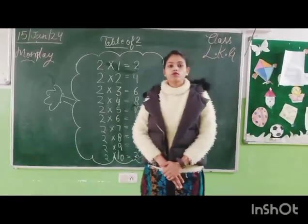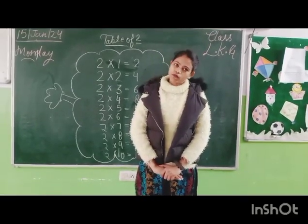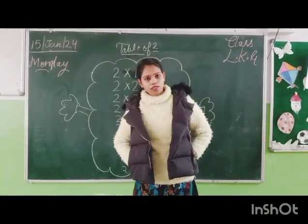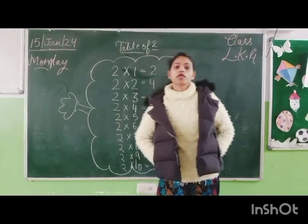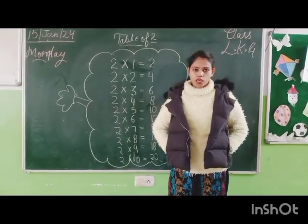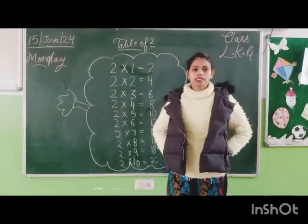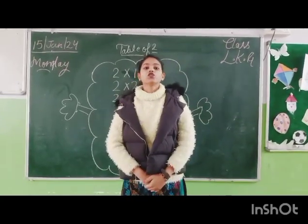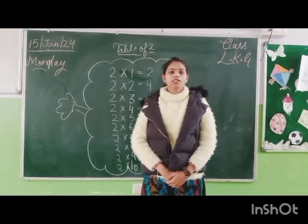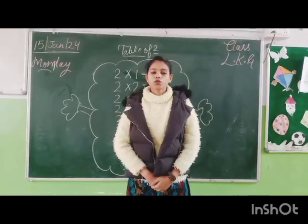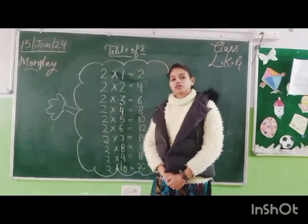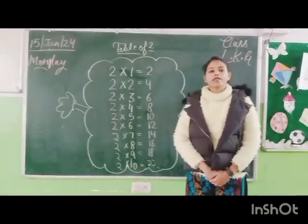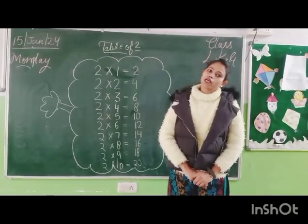Now you have to learn this table from your home. Okay students, now do it again. Two ones are two, two twos are four, two threes are six, two fours are eight, two fives are ten, two sixes are twelve, two sevens are fourteen, two eights are sixteen, two nines are eighteen, two tens are twenty.